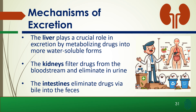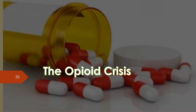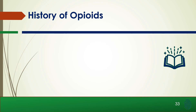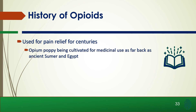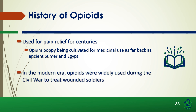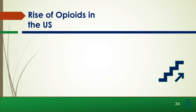Now I want to dive into specifically a drug class — opioids — and the opioid crisis. Looking back at the history of opioids, they've been used in pain relief for centuries, with opium being cultivated for medicinal use as far back as ancient Sumer and Egypt. In the modern era, opioids were widely used during the Civil War to treat wounded soldiers. More recently, opioid use began to rise in the United States in the 1990s.